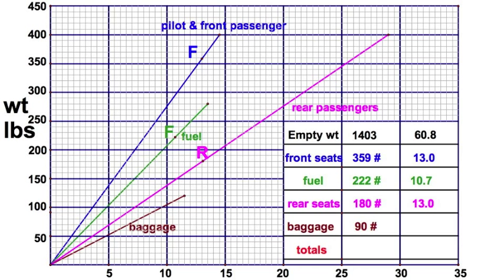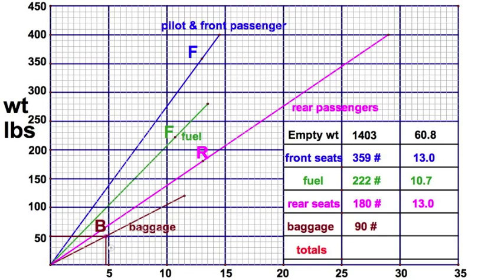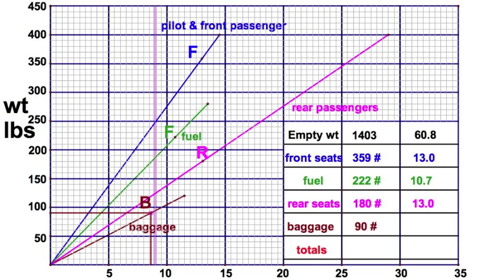Just one last thing — where does baggage go? There's B for baggage. Moving baggage along: 50, 60, 70, 80 — there's about 90 pounds of baggage right there. Reading the horizontal axis: that would be 9, and a little bit below it would be 8.5. So you should be able to read that at about 8.6, eight and six tenths. Get good at reading these graphs because it is important.